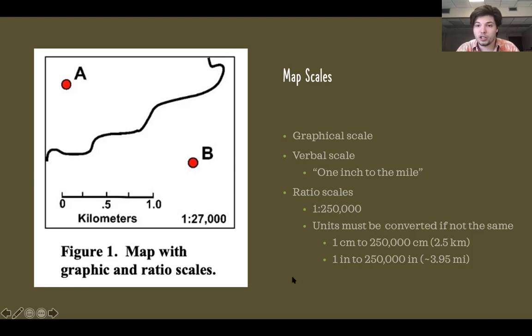Or you could say that 1 inch is the equivalent of 250,000 inches in the real world. But because of the way conversions of metrics work, for that scale, 1 inch would not be 2.5 miles. It would be about 3.95 because of the conversion from inches to miles. So keep that in mind when you're thinking about ratio scales. Those scales apply to single units and then need to be converted to your units of interest for the real world.